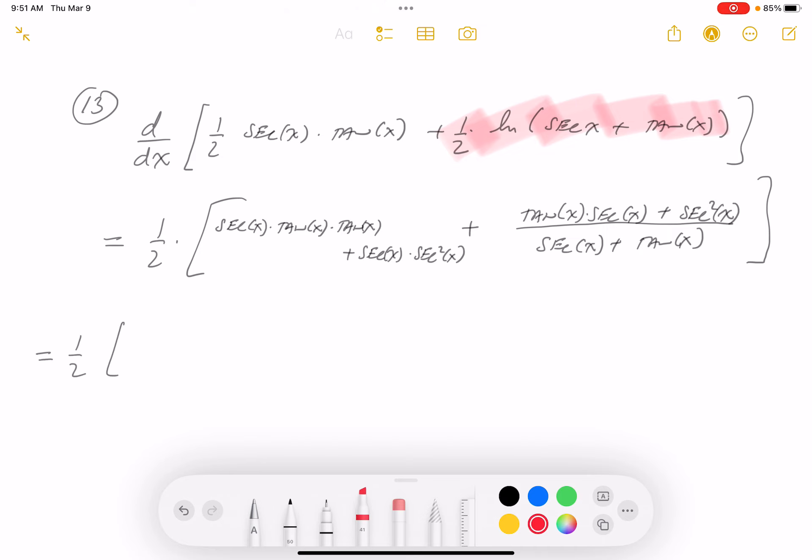The first term, this term over here, I'm going to write a little differently. I'm going to write it as secant x tangent squared. The next term I'm going to write is secant cubed. The next term, I'm going to factor it.